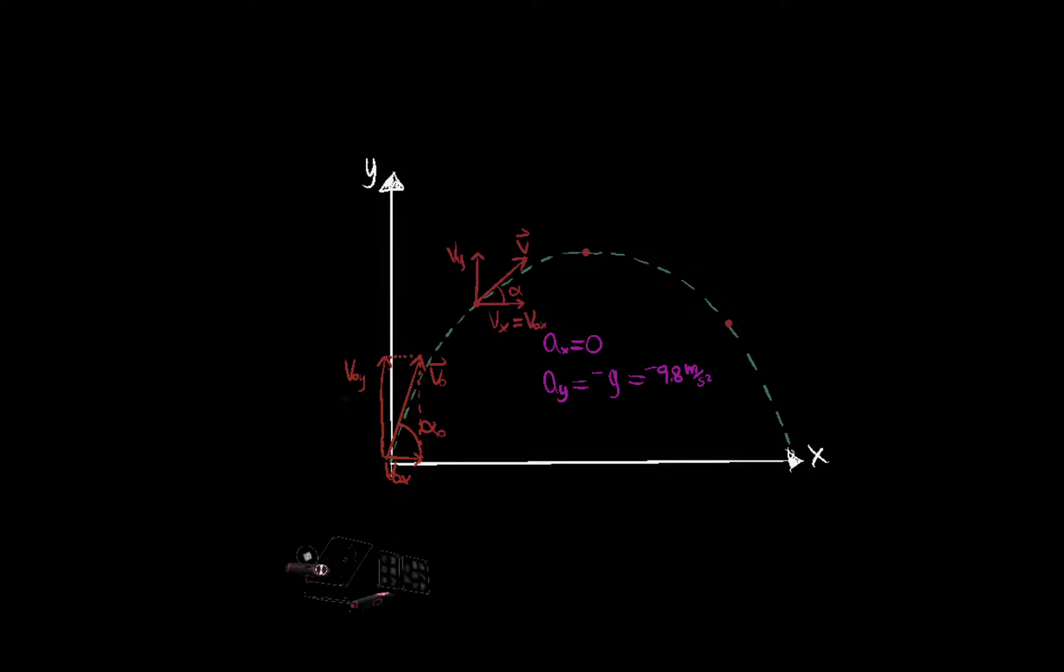But v y is different. V y here is less than v naught y. So v naught y is greater than v y here, because acceleration in the y direction is negative. And so it's decreasing its speed in the positive y direction.